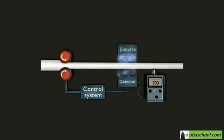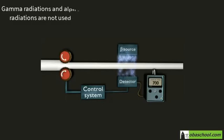Hence, the detector cannot detect any difference if the paper is thin or thick and respond properly. That's why gamma radiation and alpha radiation are not used in checking the thickness for fabricating papers.